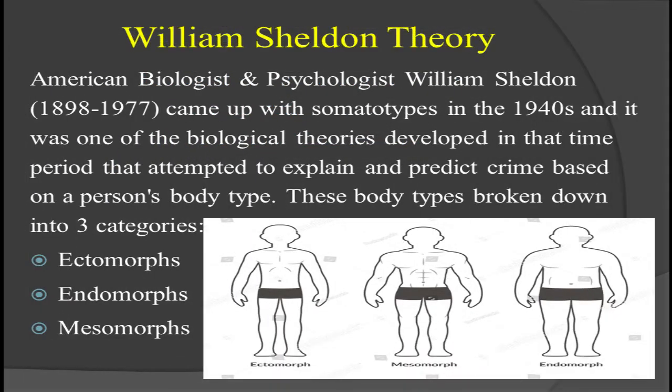American biologist and psychologist William Sheldon came up with somatotype in the 1940s. It was one of the biological theories developed in that time period that attempted to explain and predict crime based on a person's body type. These body types are broken down into three basic categories: ectomorphs, endomorphs, and mesomorphs.